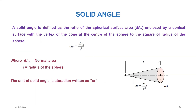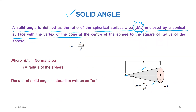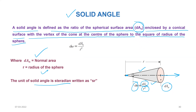Another definition of the solid angle: a solid angle is defined as the ratio of the spherical surface area dAn — the normal area enclosed by a conical surface, with the vertex of the cone at the center of the sphere — to the square of the radius of the sphere. So dΩ equals dAn divided by r². Here dAn is the normal area and r is the radius of the sphere. The unit of solid angle is known as steradian, written as sr.